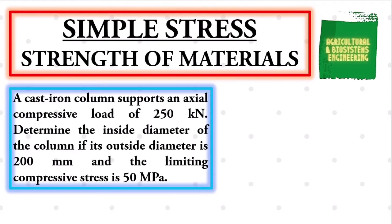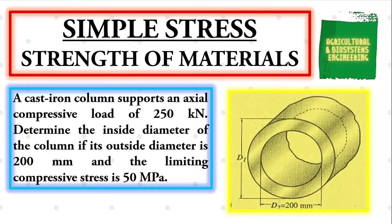Welcome to another tutorial video regarding simple stress under strength of materials. This time, we will be solving the problem: a cast iron column supports an axial compressive load of 250 kN. Determine the inside diameter of the column if its outside diameter is 200 mm and the limiting compressive stress is 50 MPa.